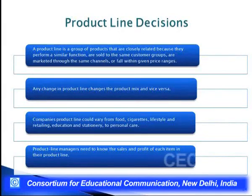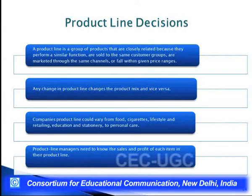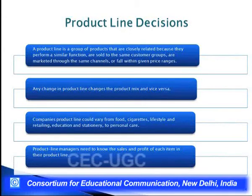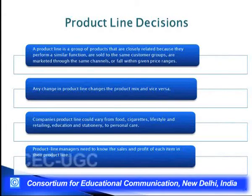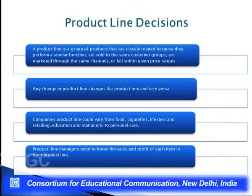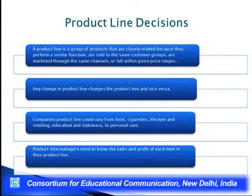A product line is a group of products that are closely related because they perform a similar function, are sold to the same type of customers, are marketed through the same channels, or fall within the same price range. Any change in the product line will lead to change in the product mix and vice versa. A company's product line could vary from food, cigarettes, lifestyle products, and education products to personal care. Product line managers constantly need to know the sales and profit of each item in their product line to determine whether they want to build, maintain, harvest, or divest any line not giving them sufficient profits.